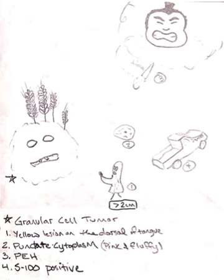This is granular cell tumor, which is depicted by the tumor guy with grains growing on him. This is a yellow lesion on the dorsal of the tongue — 40% of the time they occur on the dorsal of the tongue, and they are less than two centimeters.